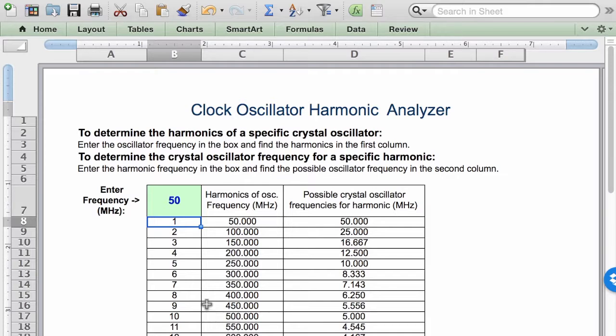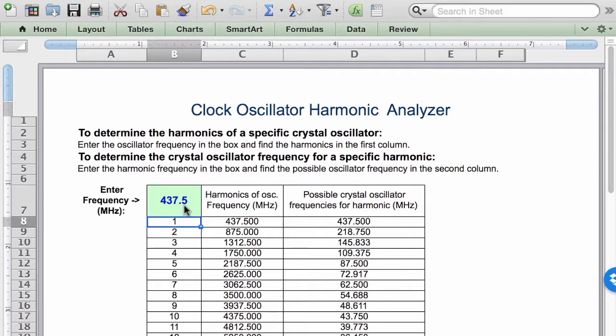Now the second way of using this analyzer is to enter in a harmonic in this green cell. I recently was working with a client, and their product had a very high 437.5 megahertz harmonic.